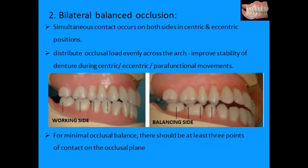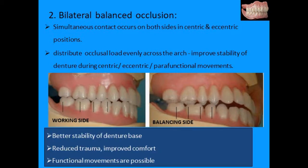The next one is bilateral balanced occlusion, which we discussed in session 1. There is simultaneous contact occurring on both sides in centric and eccentric positions, which distributes the occlusal load evenly across the arch, thereby improving the stability of the denture during centric, eccentric, and parafunctional movements. For minimum occlusal balance there should be at least three points of contact on the occlusal plane — one anteriorly and two posteriorly. Bilateral balanced occlusion provides better stability of denture base, reduced trauma, improved comfort, preservation of residual structures, and functional movements without occlusal interferences.